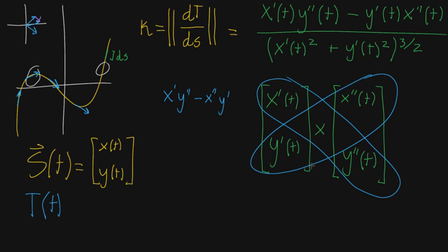But the way that you interpret this vector, well, I'll get to the interpretation in just a moment. First, let me write out what this is in terms of our function s. This first vector is just the first derivative of s. So that's s prime of t, the first derivative of s.